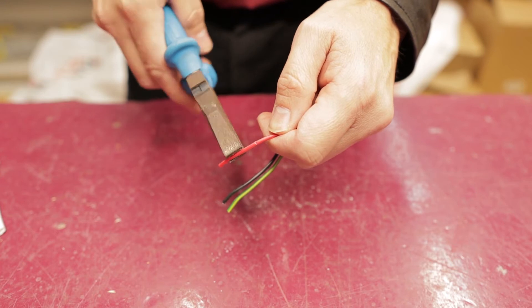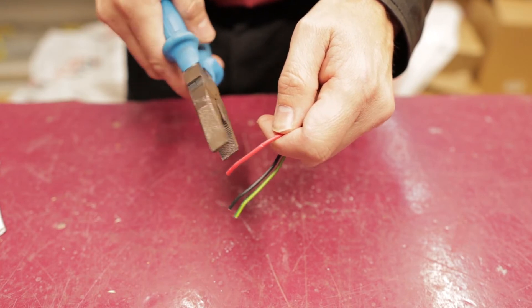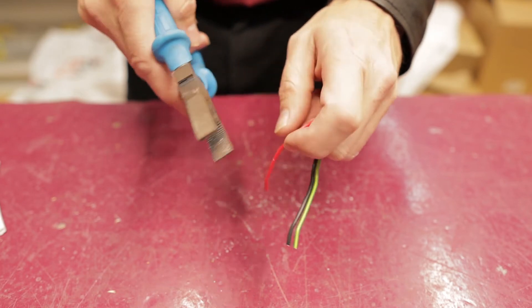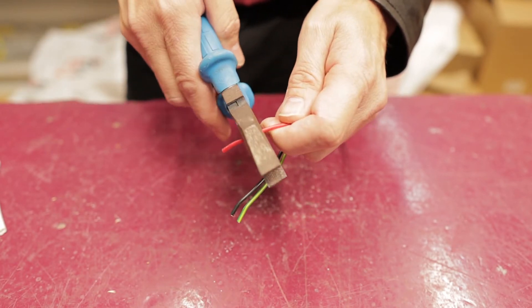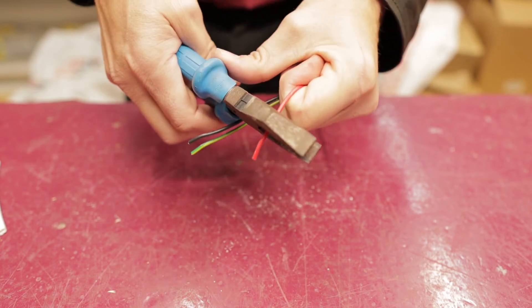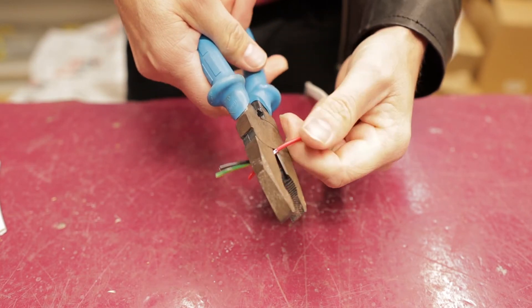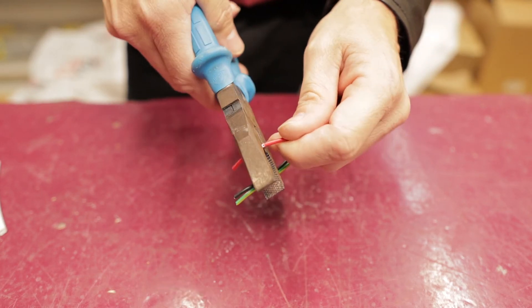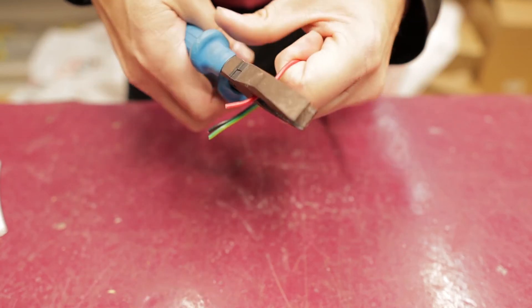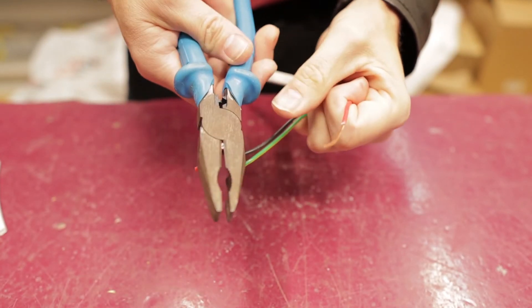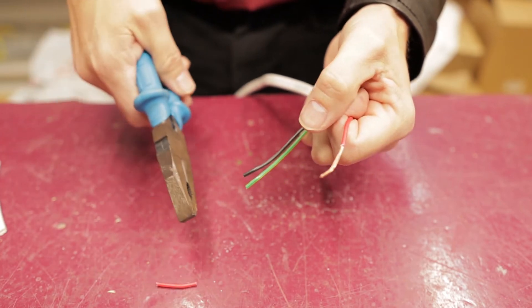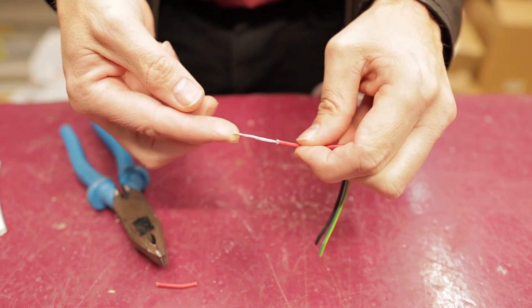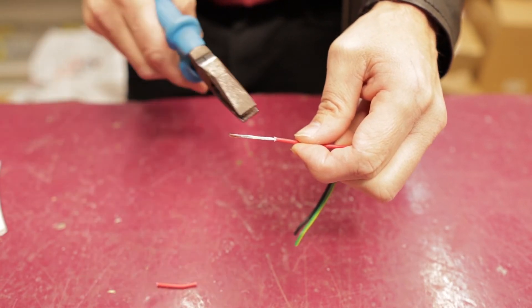If you do that what happens is this part of your plier will bite into the copper and it'll get stuck and you won't be able to get the insulation off. So it's just a matter of doing that and you can see, I'm trying to do this slowly, you can see how I'm pulling away from the copper, I'm not biting into the copper. And when you do that successfully it'll come off like that and done, nice bare copper.